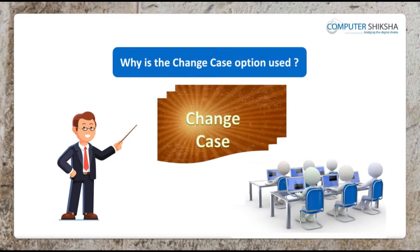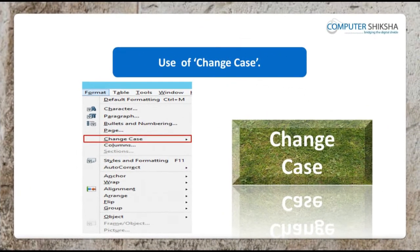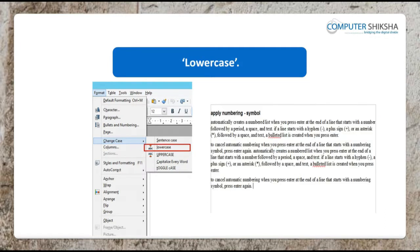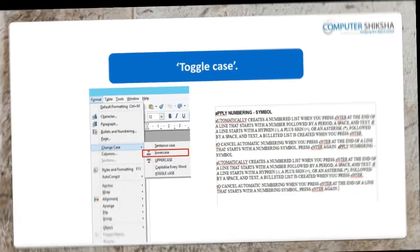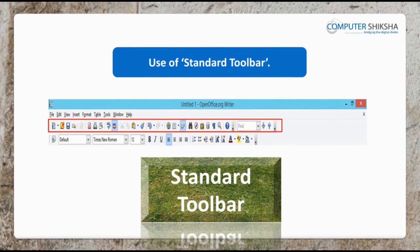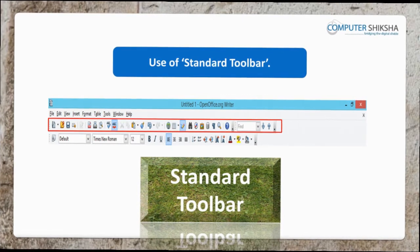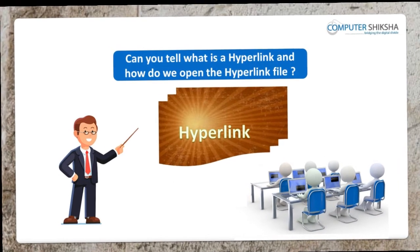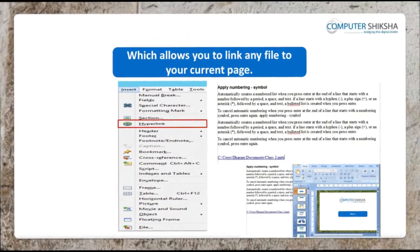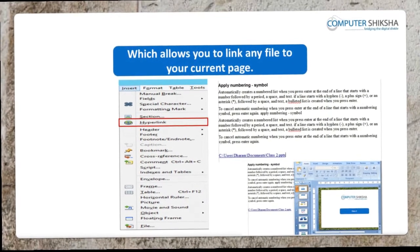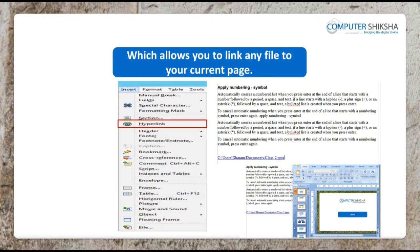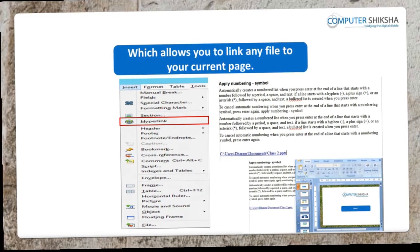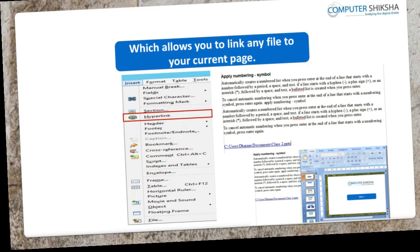Why is the change case option used? With change case, you can change the case of your line or paragraph into capital, small, and can even toggle the case. The standard toolbar is a toolbar which contains options of some of the frequently used menus. We can therefore use it as a shortcut. Hyperlink is an option which allows you to link any of your files to your current page. You can open the hyperlink files by keeping the control button pressed with the left hand and then left clicking on the mouse or touchpad.